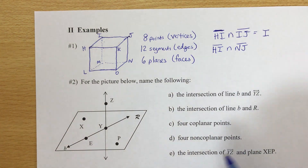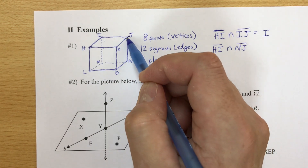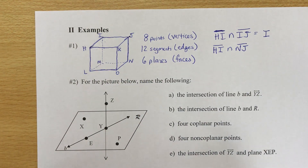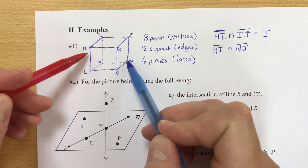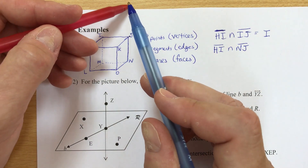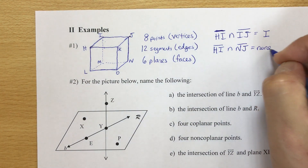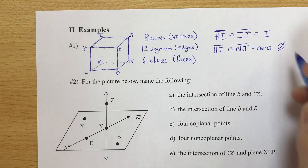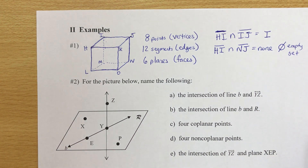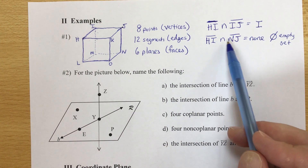What about segment HI intersecting segment NJ? Tracing HI and NJ — those don't touch at all. Even if I continued, one goes off this way and NJ goes up and down; they're never going to meet. So the intersection is none, written as a zero with a slash through it — that's called the empty set.